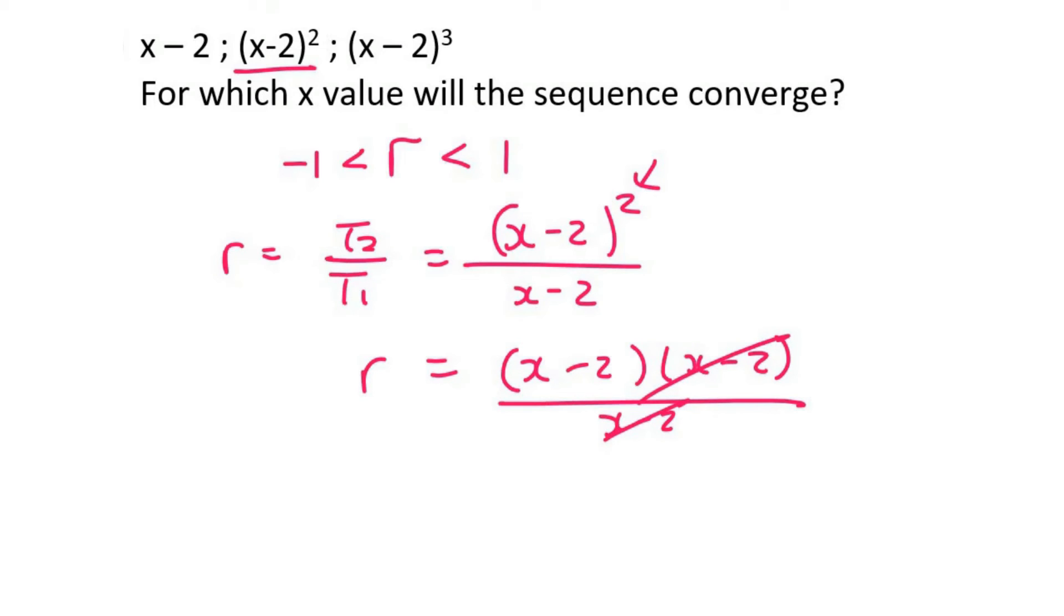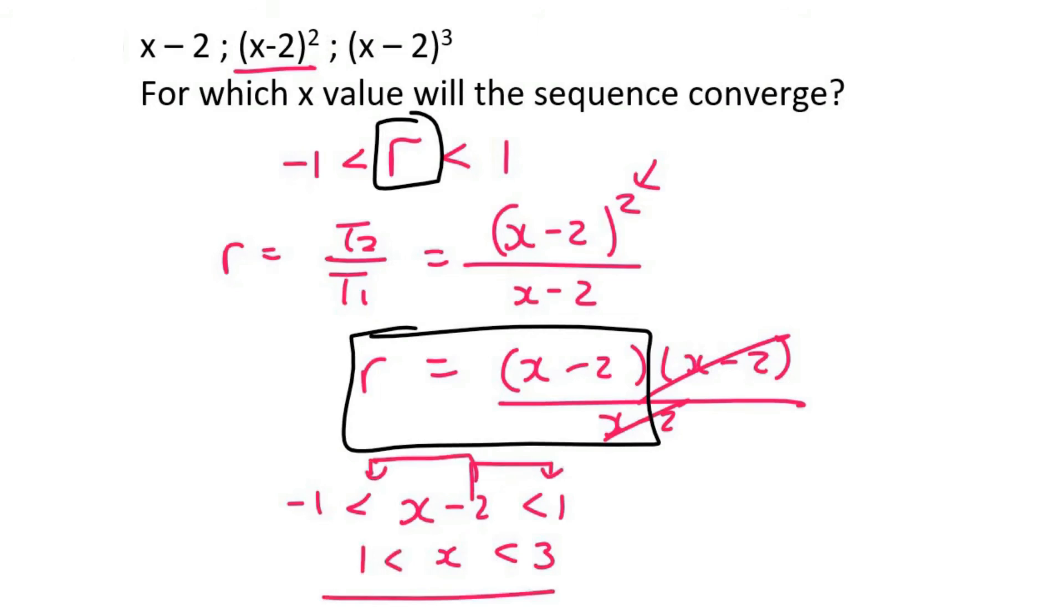What I then do is I take this r, which is x minus 2, and I replace it over here. So I say x minus 2 is smaller than 1 and bigger than negative 1. I then solve by taking this minus 2 there, and I also take it over to the left. And so there is our answer. x < 3.